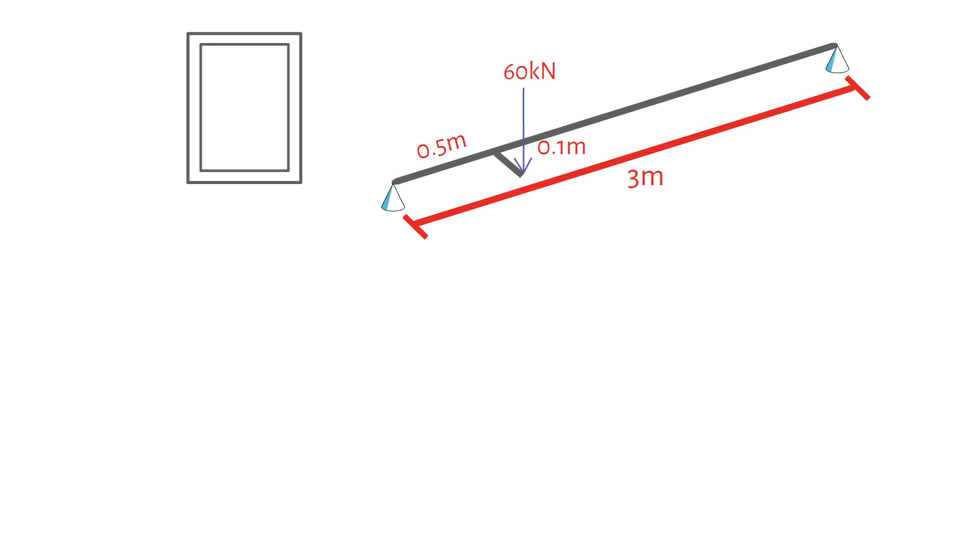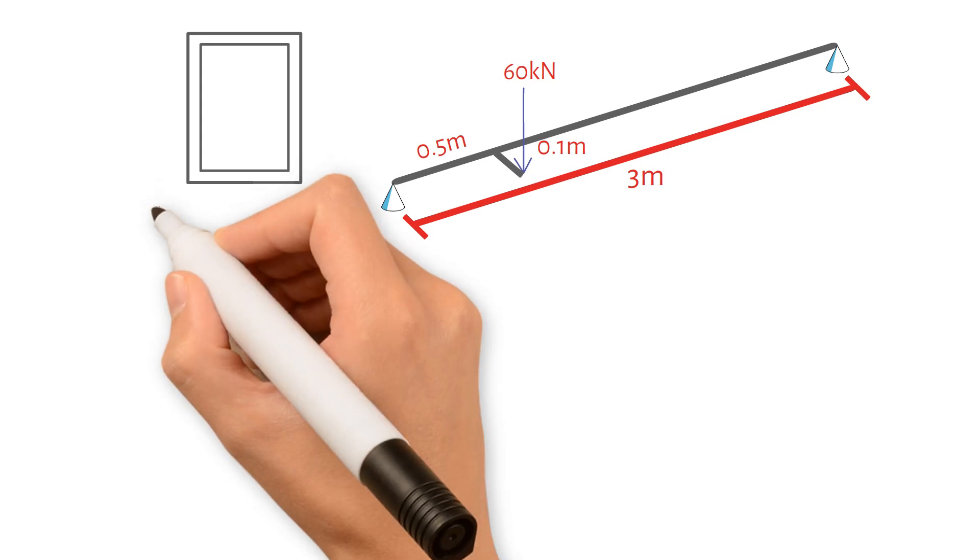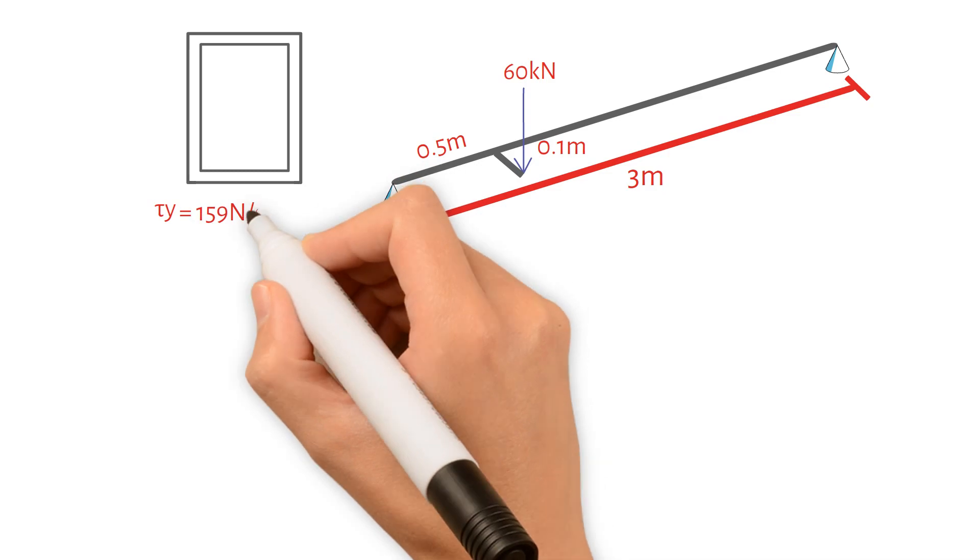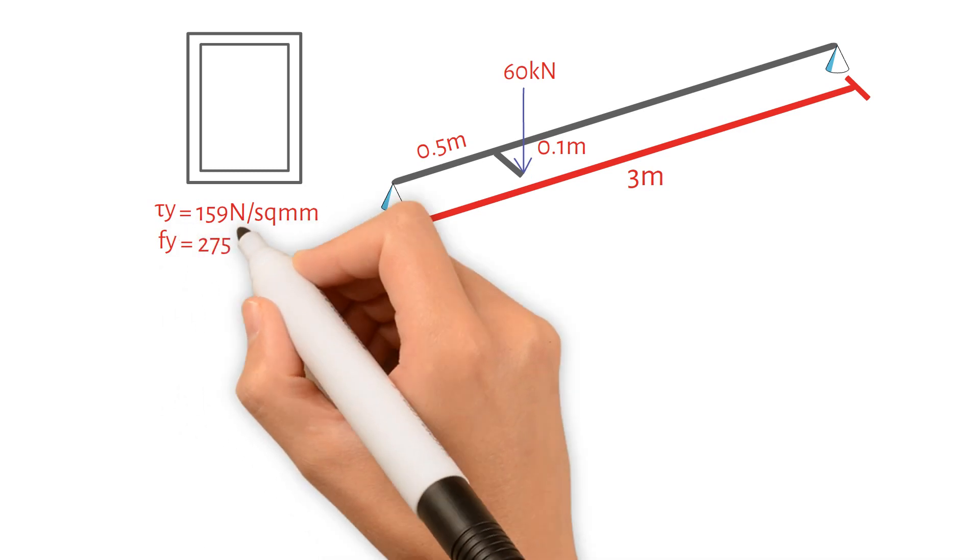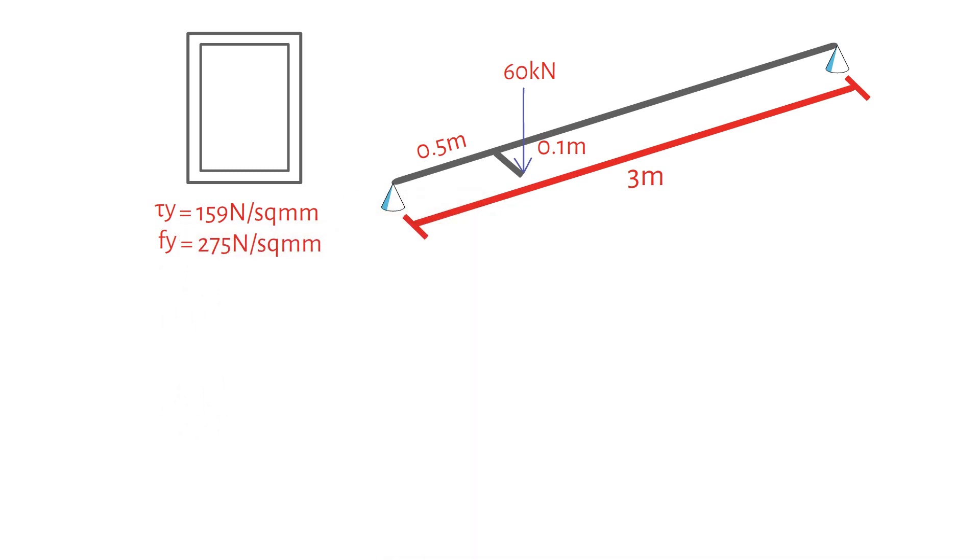The approach is to determine the initial dimensions of the beam based on bending, then check the combined shear stress resulting from bending and torsion. Assuming that the shear yield stress is 159 N per square millimetre and the characteristic strength of mild steel is 275 N per square millimetre.